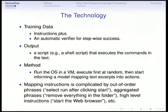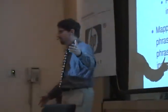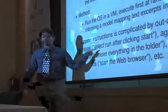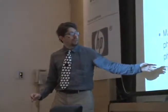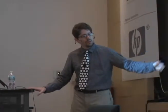The output is that type of script. The method is to run this in a virtual machine, execute first at random, and start forming a model that maps things. The process is quite complicated because the instructions can be out of order. There are also multiple ways to mention the same thing — they count at least seven different ways to say 'click on the start menu.' You also have aggregated phrases referring to multiple actions, and high-level instructions like 'start the web browser.'